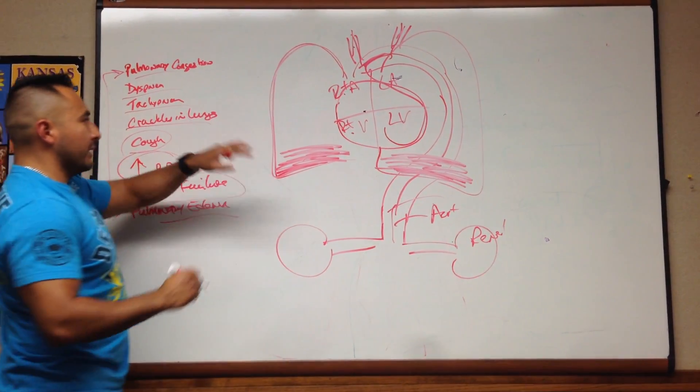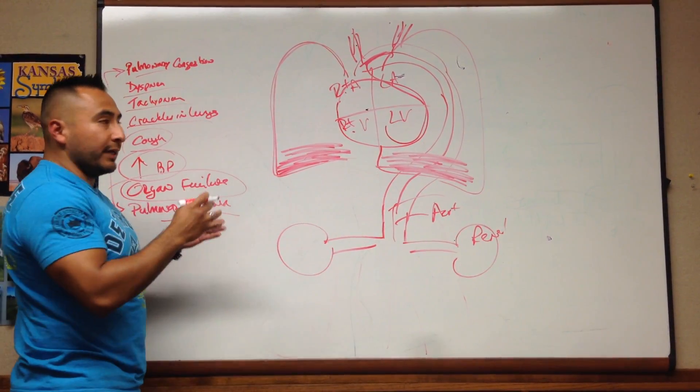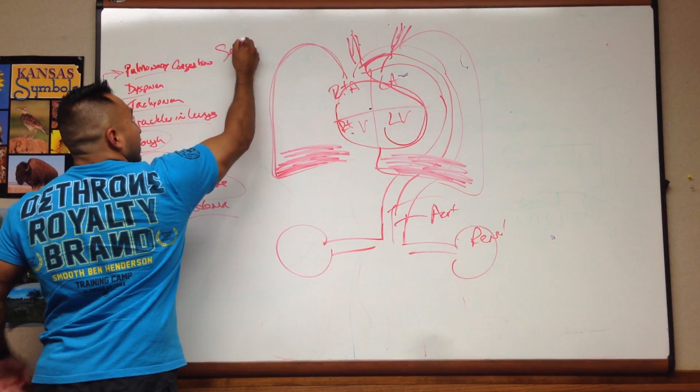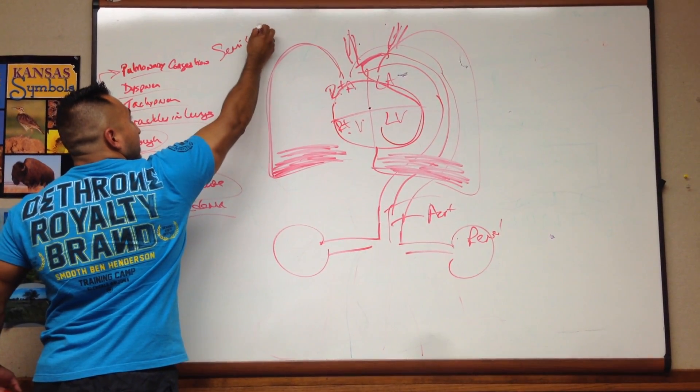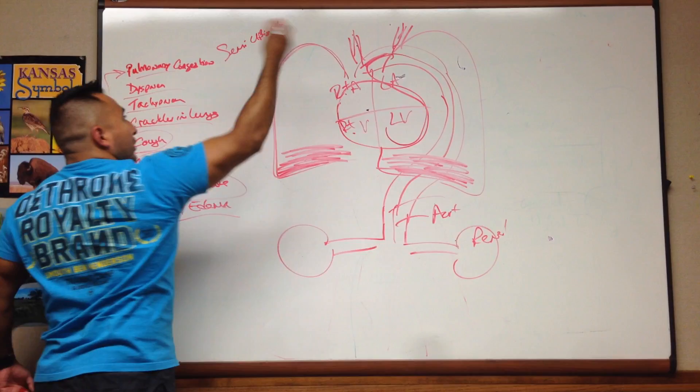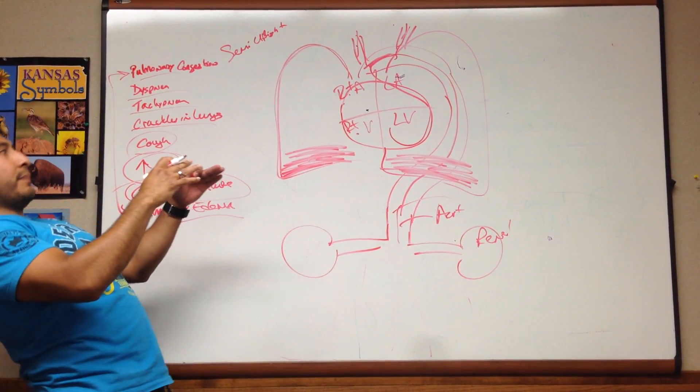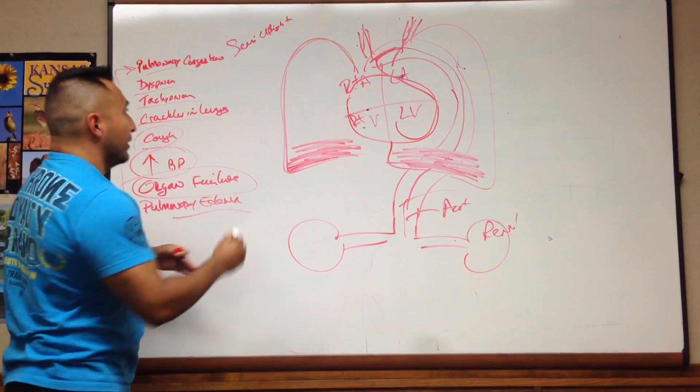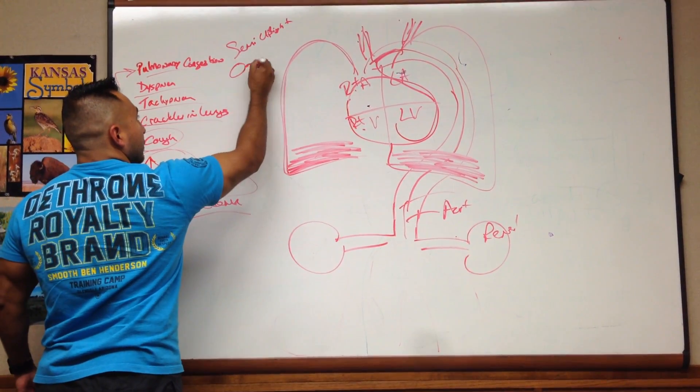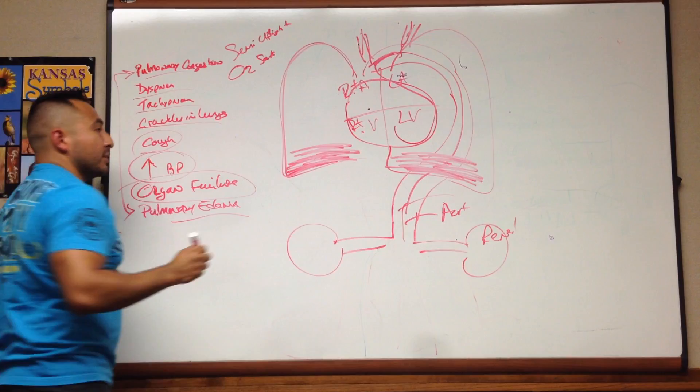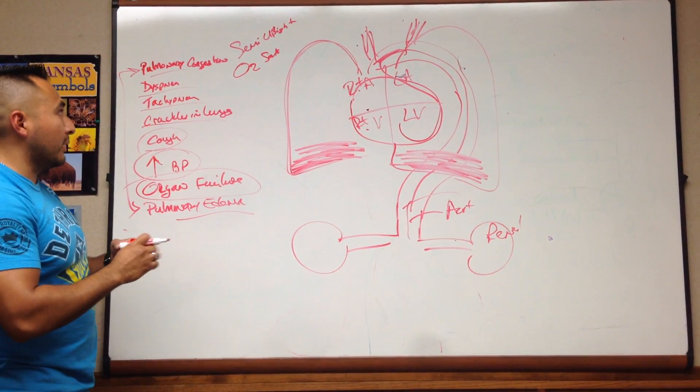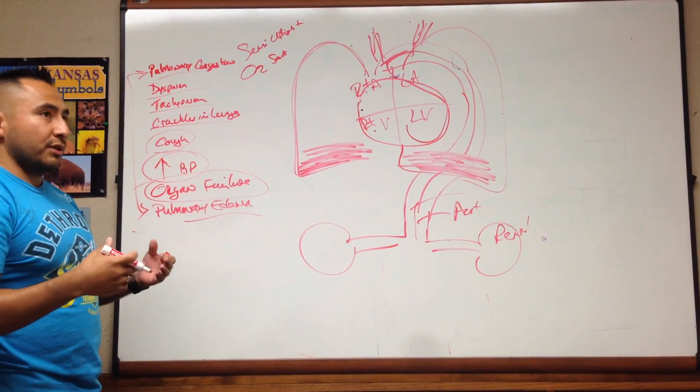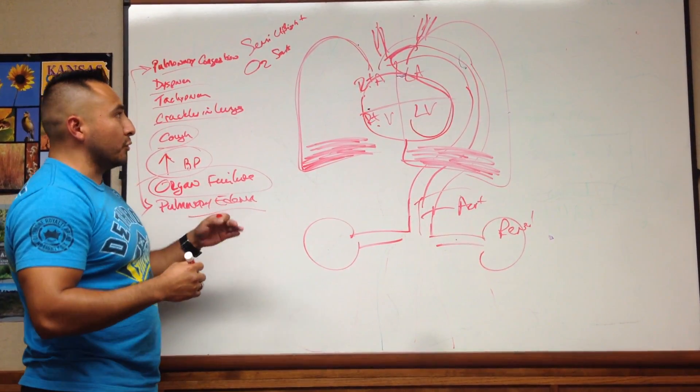Now, because of this situation, you cannot have the patient lying supine. You want them in a semi-upright or upright position. If they're lying in a supine position, that fluid's going to disperse and make it difficult for them to breathe. So another thing that you want to do is monitor their O2 saturation. Hook them up to an oximeter and supplement with the appropriate O2 if needed.